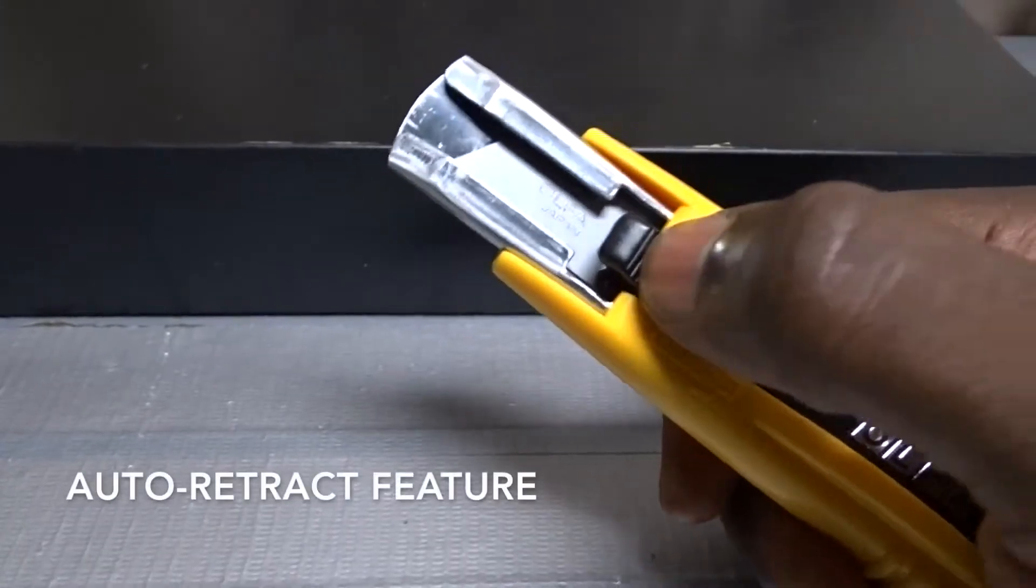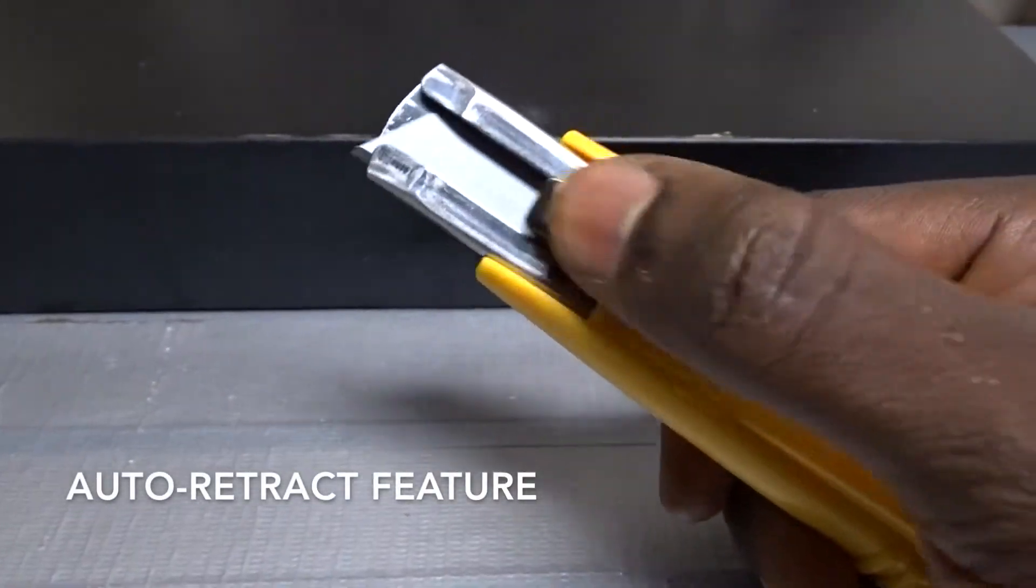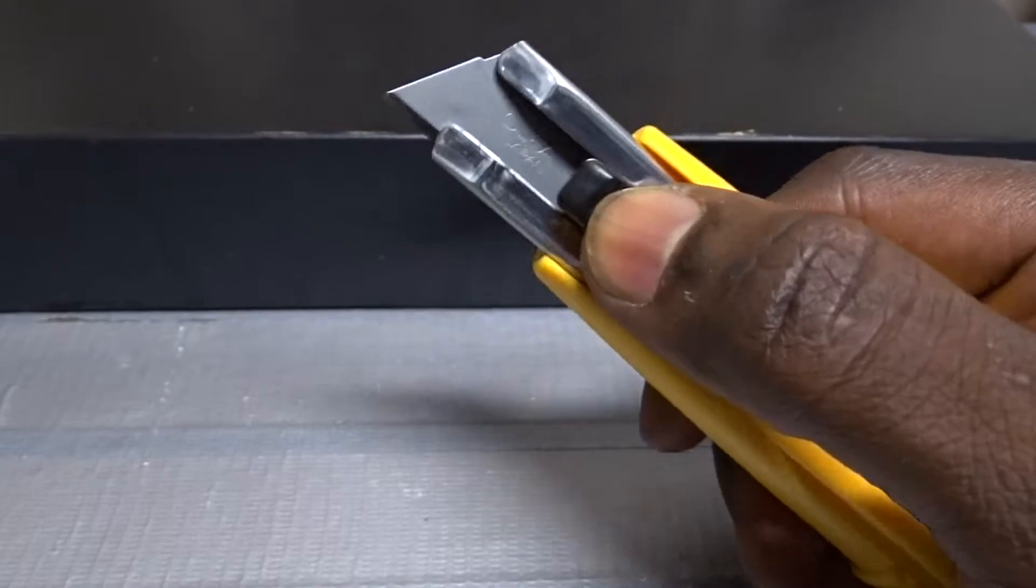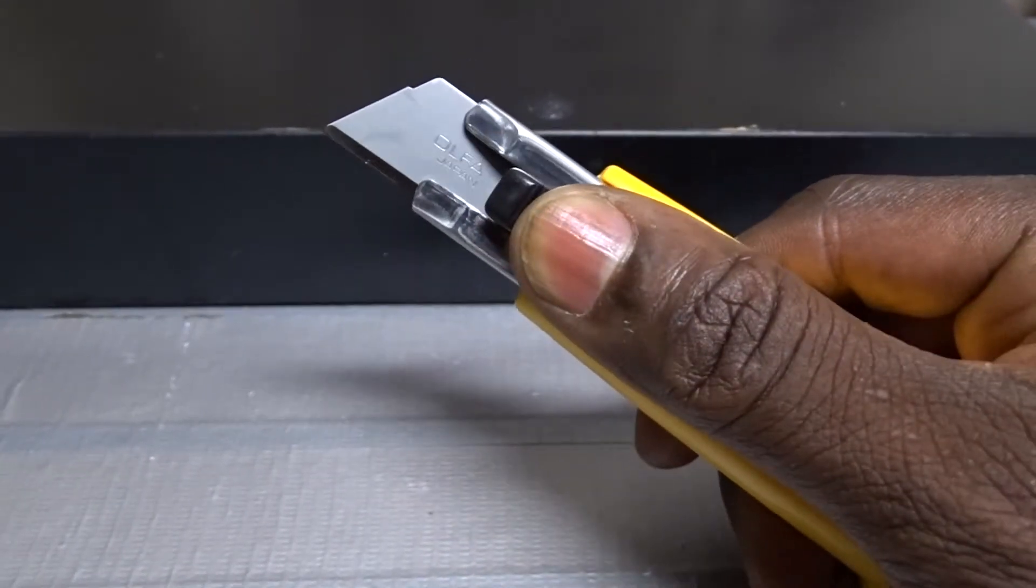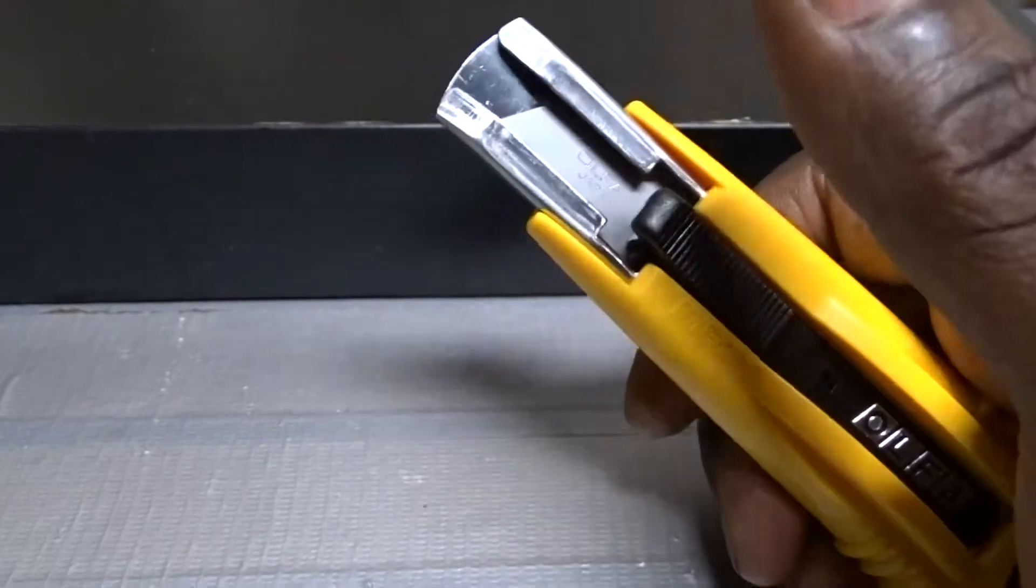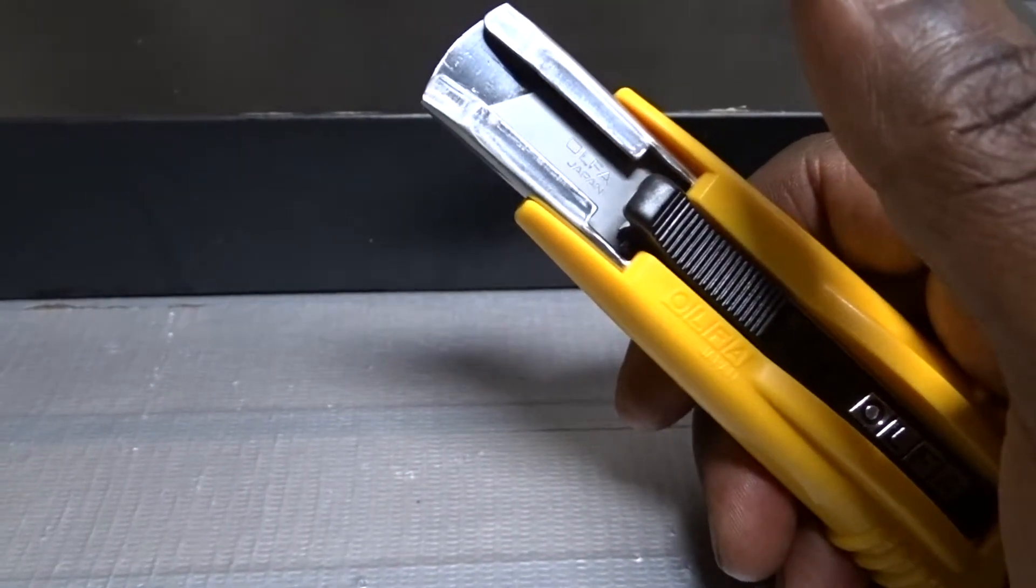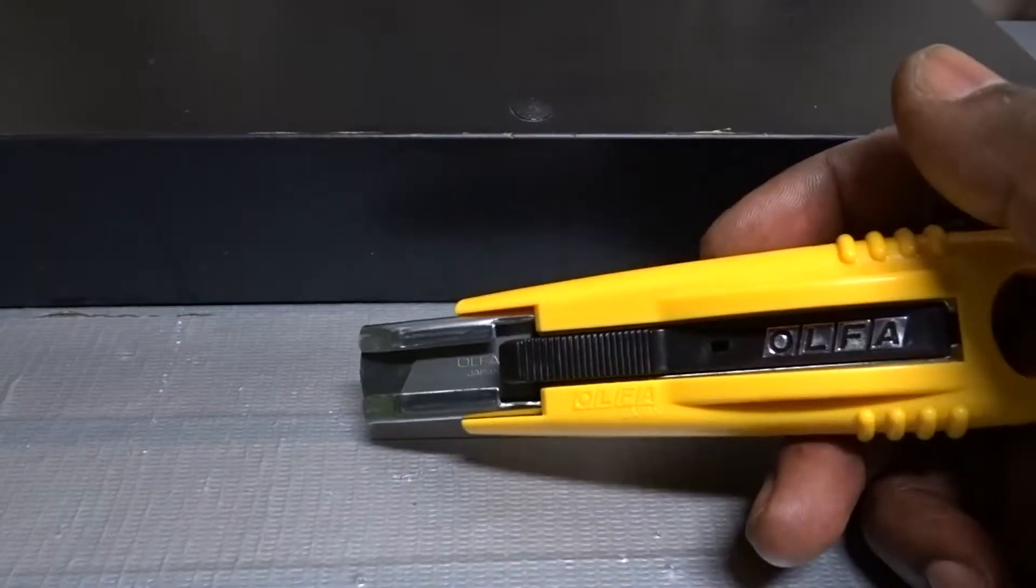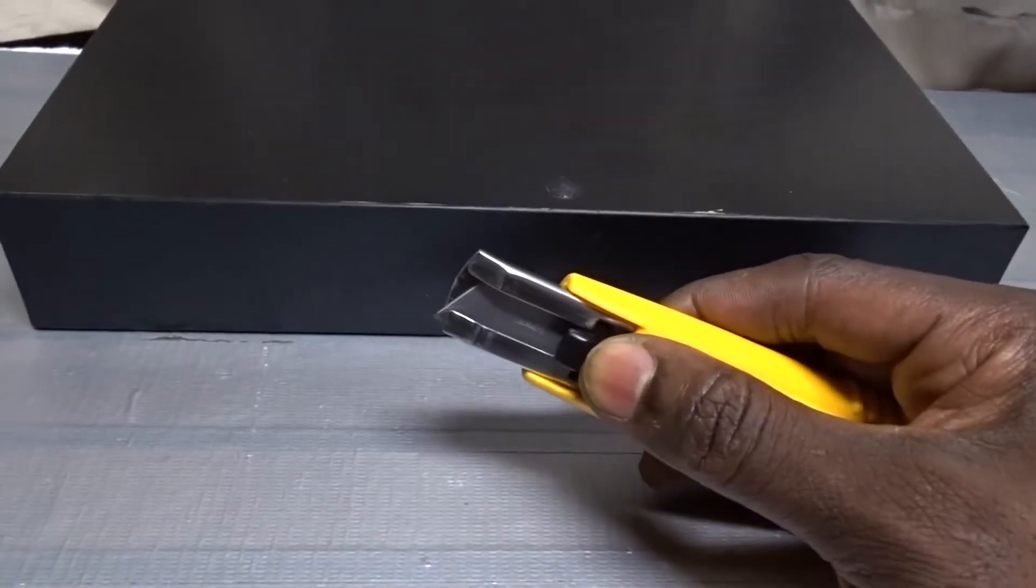Here that automatically retracts by itself. In order to keep this out like this, you have to hold it like this, and once you let your thumb go, it retracts. Now to me, I like the knife. It's not bad.